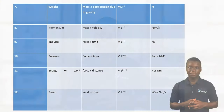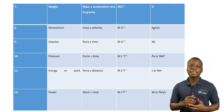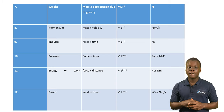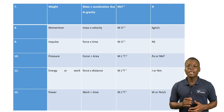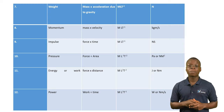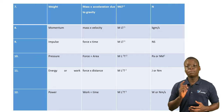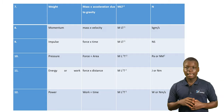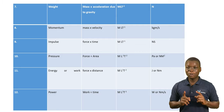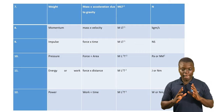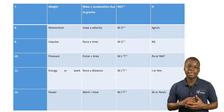Next up we have weight. The derivation or formula for weight is mass times acceleration due to gravity. Therefore, the dimension will be MLT raised to power minus 2, and weight is also measured in Newton. Next, we have momentum. The derivation, or formula of momentum, is mass times velocity. Combining the dimensions of mass and velocity, we get MLT raised to power minus 1, and momentum is measured in kilogram meters per second.